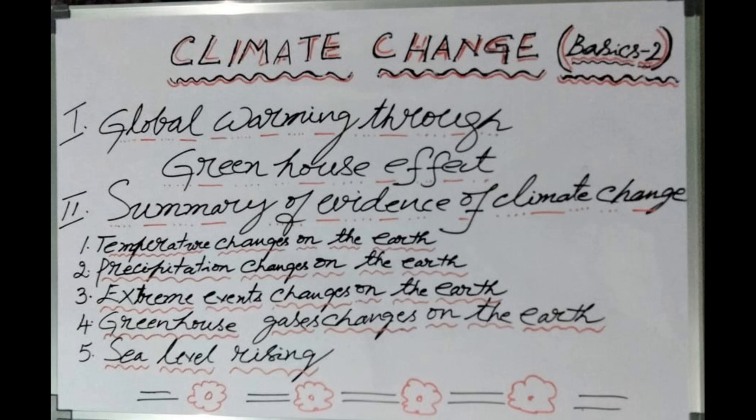To sum up this class, we covered global warming and greenhouse effects, and the summary of evidence of climate change under subheadings: temperature changes, precipitation changes, extreme event changes, sea level rising at 3 mm per year, and greenhouse gases — particularly CO2 rising from 280 to 380 ppm. We will meet in Climate Change Basics 3 in the next class. Please share this content with your classmates and friends — may God bless you.